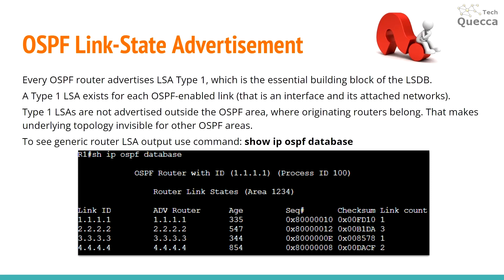A type 1 LSA exists for each OSPF enabled link. Type 1 LSAs are not advertised outside the OSPF area where the originating routers belong. That makes the underlying topology invisible for other OSPF areas. To see generic router LSA output, use the command 'show ip ospf database' — here we have an example of the output of this command.